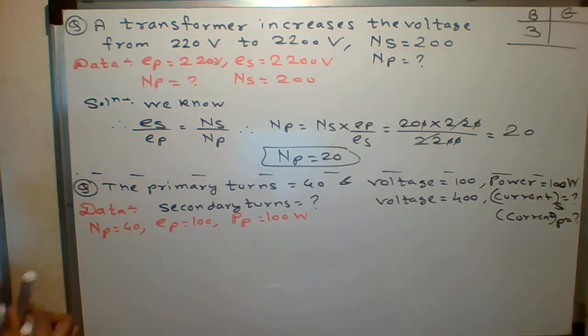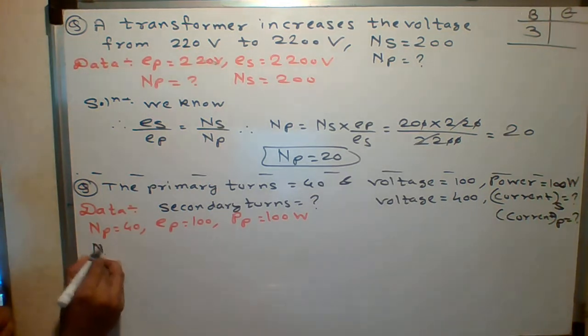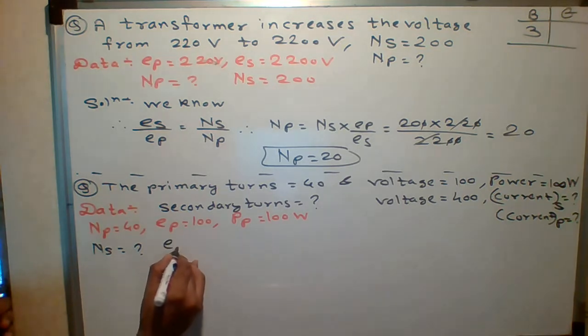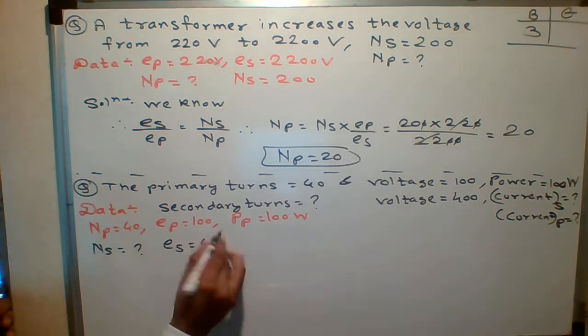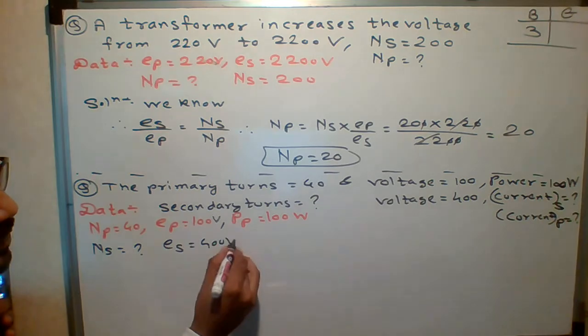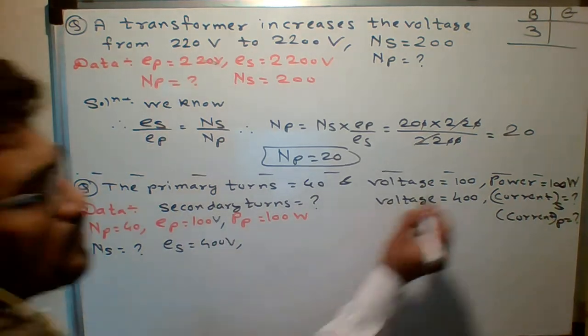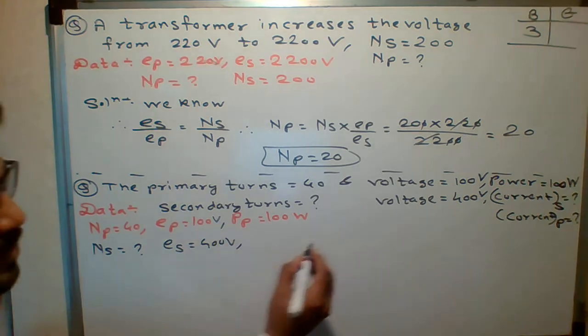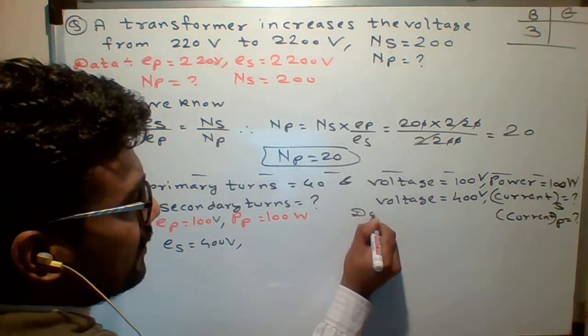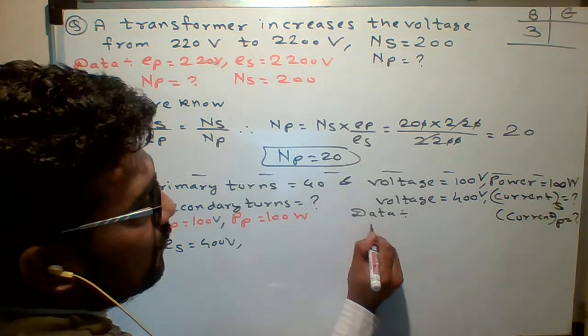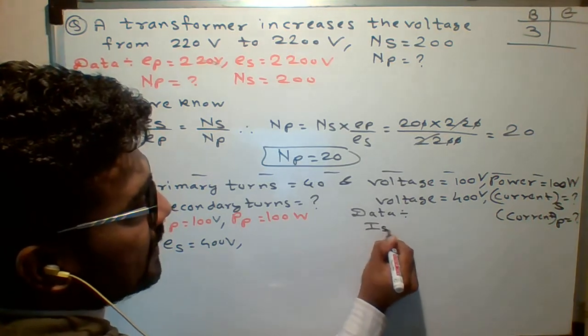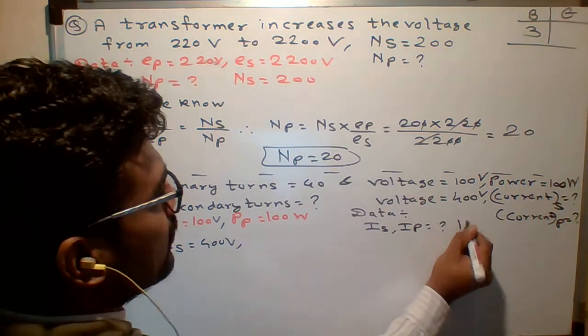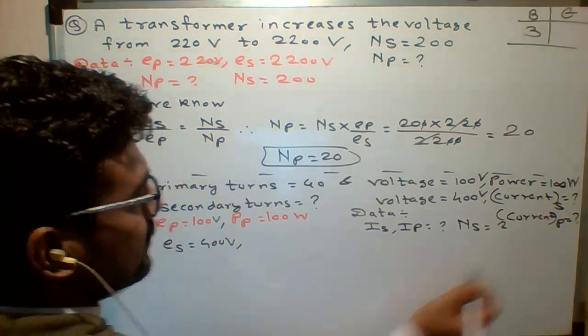Or 100 watt. Whatever it is. We need to find out number of turns at the secondary end, NS. We need to find out number of. Oh sorry. Voltage at secondary side is just given 400 volt. Okay. Agreed. And we need to find out current also. Okay. What we need. Data. What we need. I want to find current at the secondary side. Current at the primary side. Okay. And number of turns at the secondary side.